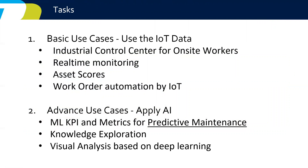Tasks. The tasks from the showcase fall into two categories. One is how to use IoT data to fulfill business requirements — including industry control center, on-site workers, real-time monitoring from the enterprise level, asset scores, and work order automation by IoT data. In practical real life, raw IoT data may not be accurate enough to indicate business logic. For example, if we detect an anomaly — say, the oven temperature is too high — and we issue a ticket, is that always the truth? No. The temperature spike may be a false alarm. That's why we need to use machine learning models based on historic data to get more accurate suggestions and recommendations from predictive maintenance.